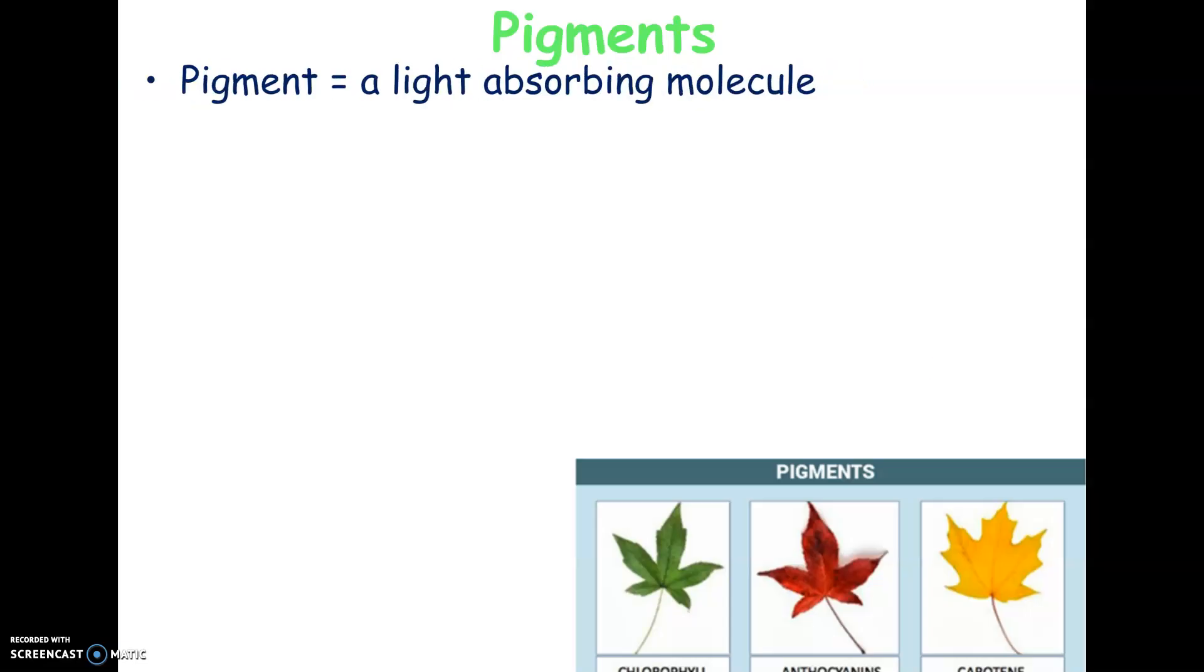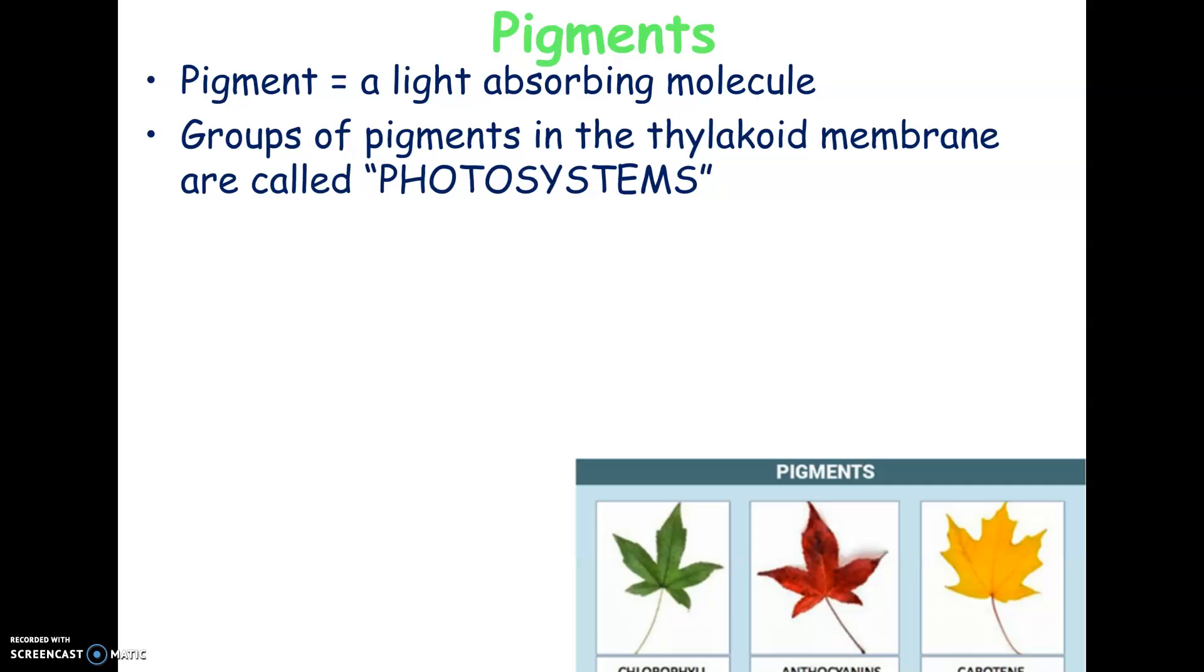So photosynthesis relies on pigments, which are light-absorbing molecules. So a pigment, you think of pigment as color. But in the leaf, the pigments in the leaf, thylakoid, in the thylakoid membranes, contain these special things called photosystems. And a photosystem is sort of a collection of pigment molecules that can capture energy.